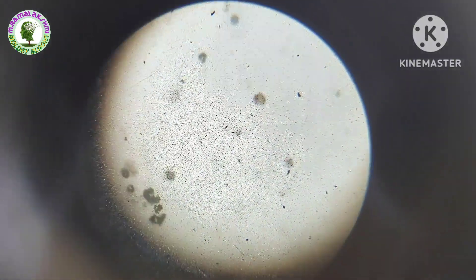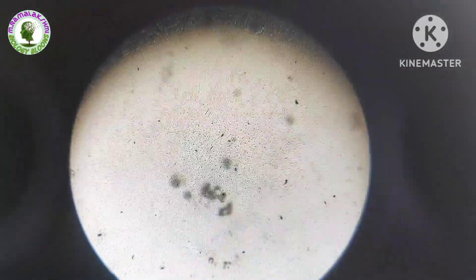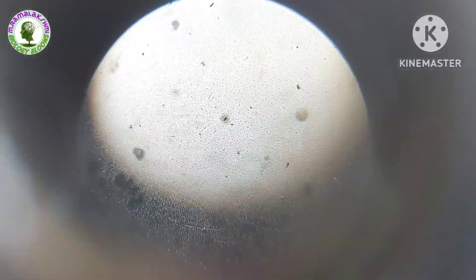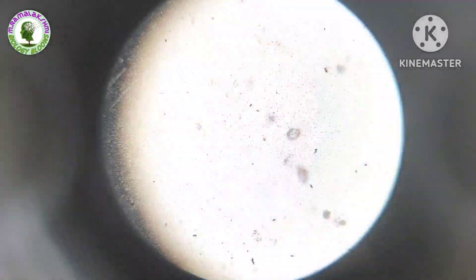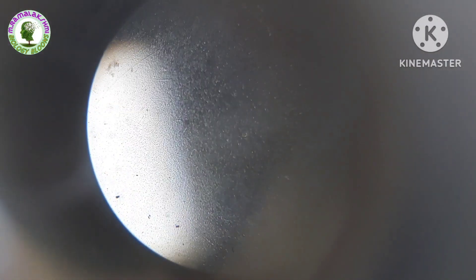The organisms which are unable to see with our naked eye are known as micro-organisms. Because they are too small to see. When we are observing under the microscope, we are able to see them. These are known as micro-organisms.